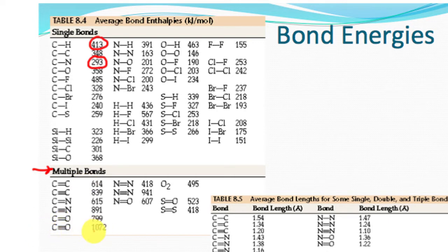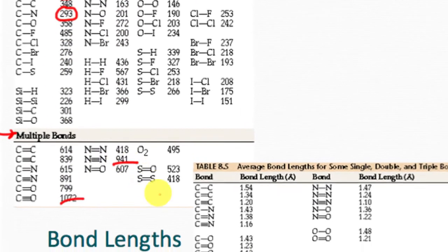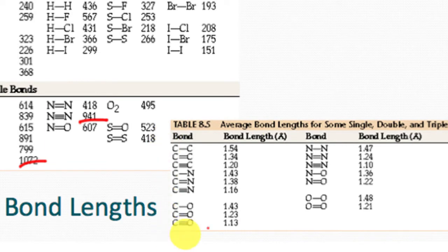A triple bond with oxygen and carbon, 1,000 kilojoules. A triple bond for nitrogen is about almost 1,000 as well. So we can see that double bonds and triple bonds and single bonds all have a certain amount of energy associated with them. And over here, this is just showing you the bond length. So for single bonds, we have 1.54, 1.34, and for a triple bond, 1.20.